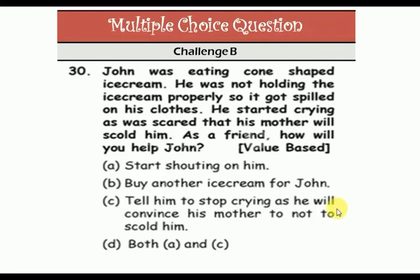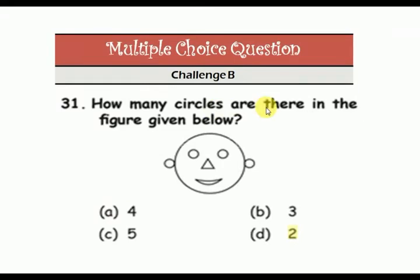Option B: tell him to stop crying and convince his mother not to scold him. Option C: both A and B. The answer is C. How many circles are there in the figure? One, two, three, four, and five.